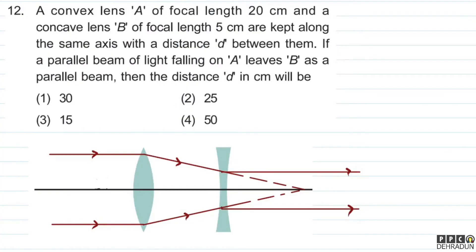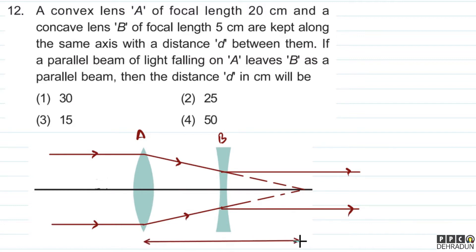So, let's see. In this question, convex lens is A and concave lens is B. A parallel beam of light falls on the convex lens. When a parallel beam falls on a convex lens, it converges on the other side at the focus. So if we consider just the convex lens, the parallel beam will converge at the focal point, and that distance is equal to the focal length of the convex lens — that is 20 cm.